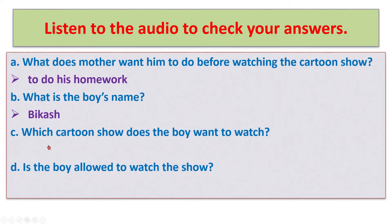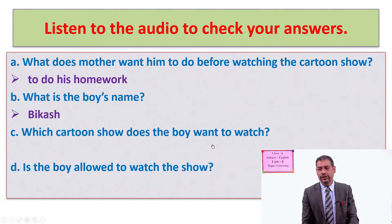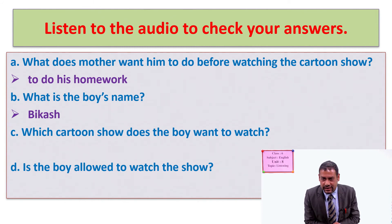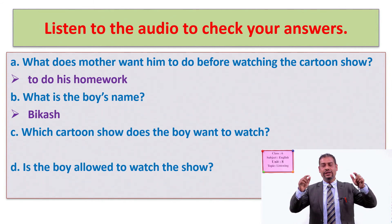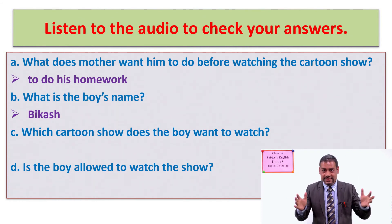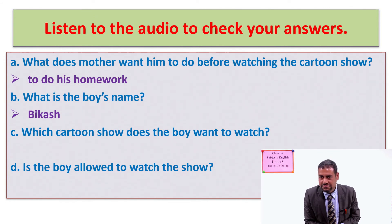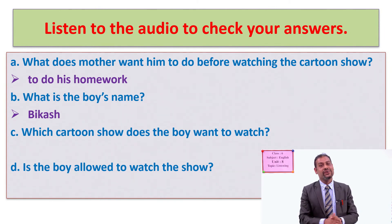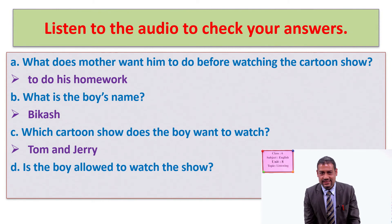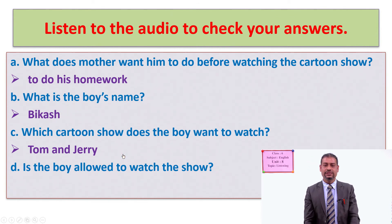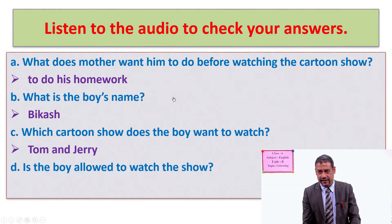For the third question — 'Which cartoon show does the boy want to watch?' — the name is clearly said in the audio. Your answer is Tom and Jerry. You only need to write 'Tom and Jerry' — it is not necessary to write the full sentence 'The boy wants to watch the cartoon show Tom and Jerry.' If you have a mistake, please correct it.